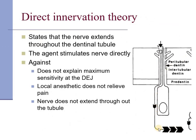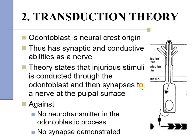The direct innervation theory states that a nerve fiber enters along with the odontoblastic process and ends at the tip of the dentinal tubule at the dentino-enamel junction. However, it does not explain the maximum sensitivity at the dentino-enamel junction, as there is only one nerve fiber ending there. The nerve fiber should stop the pain once local anesthetic is placed on top, but this does not happen. The nerve is also not demonstrated to extend the full length of the tubule. Hence, these factors do not support the direct innervation theory.